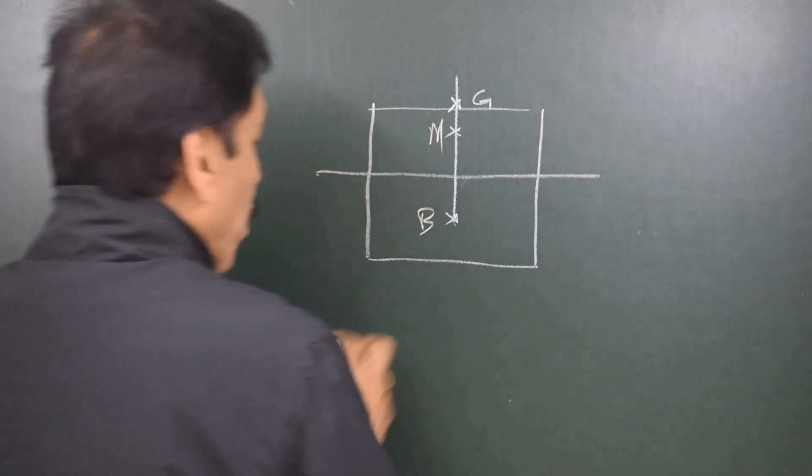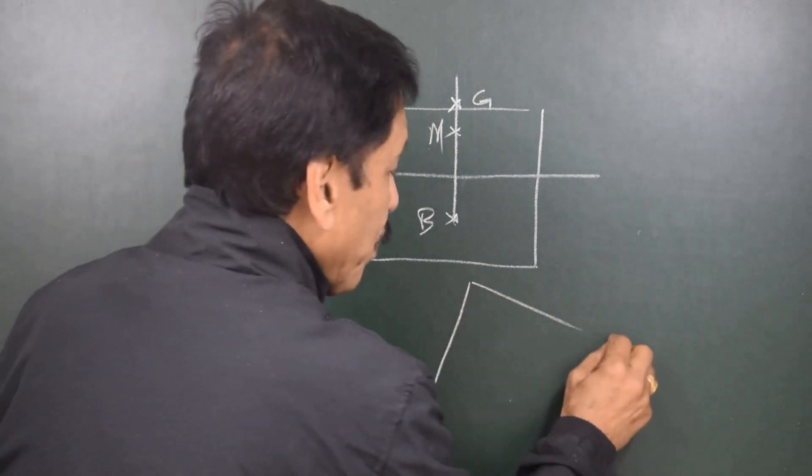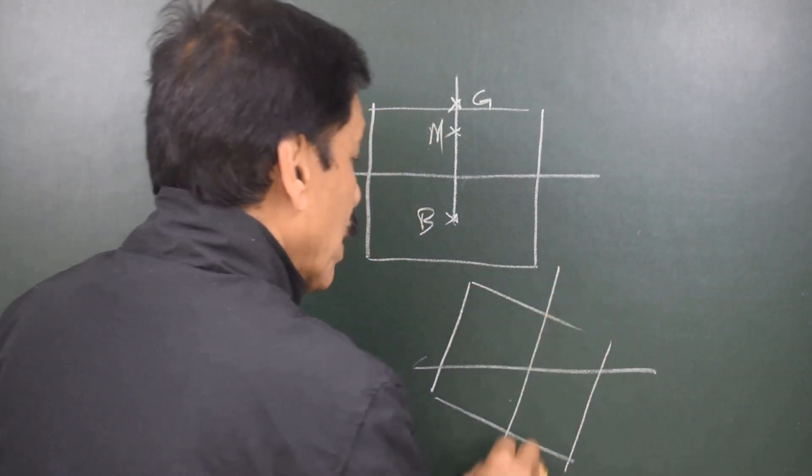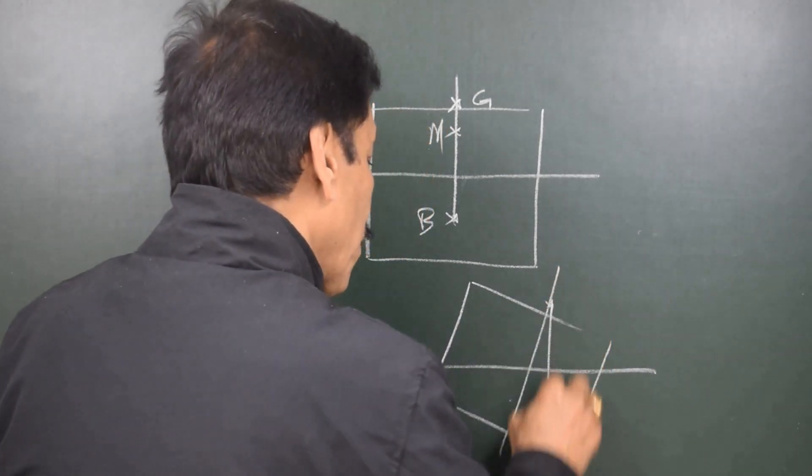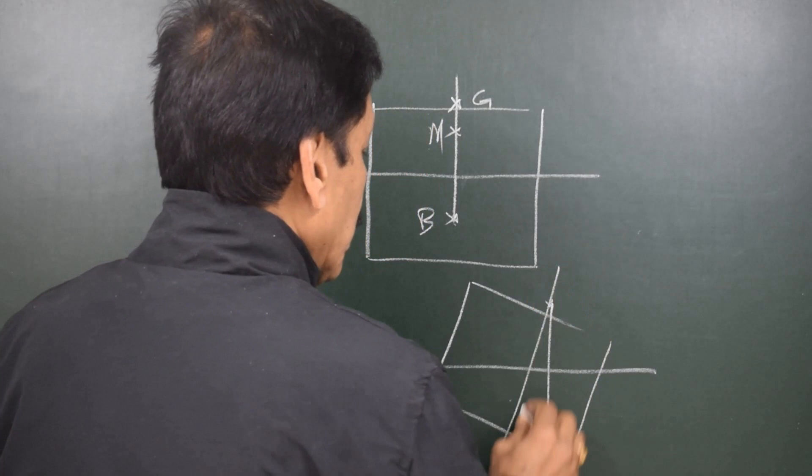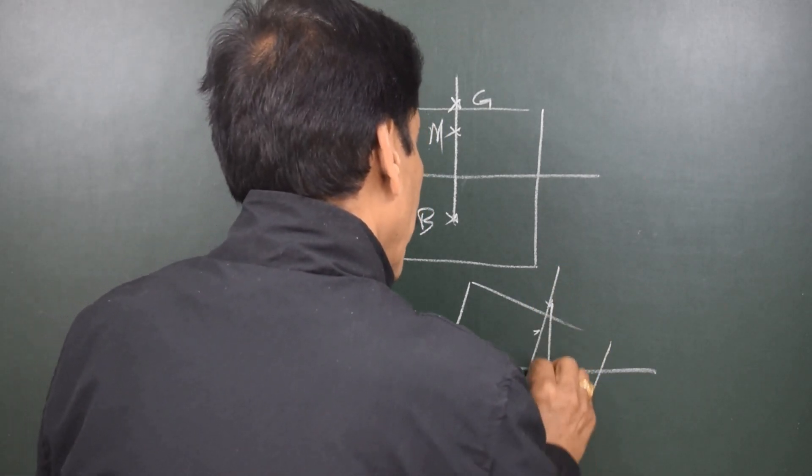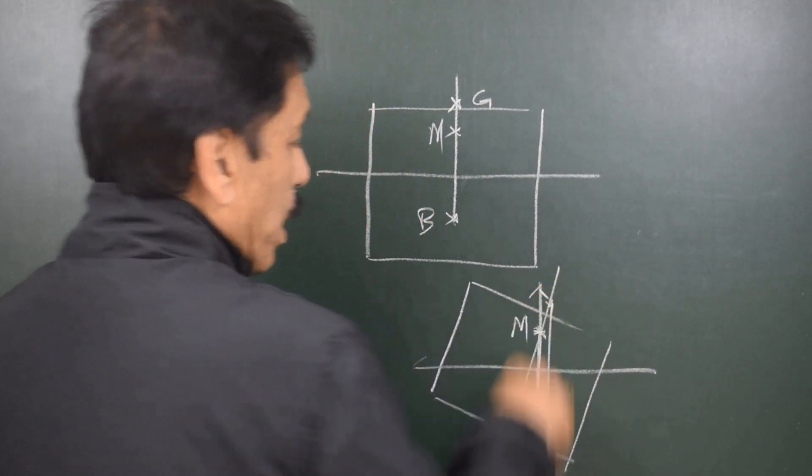Now what happens upon inclination: the ship goes on one side, and as the ship goes on one side, the vertical force through center of gravity comes like this and upright through center of buoyancy.